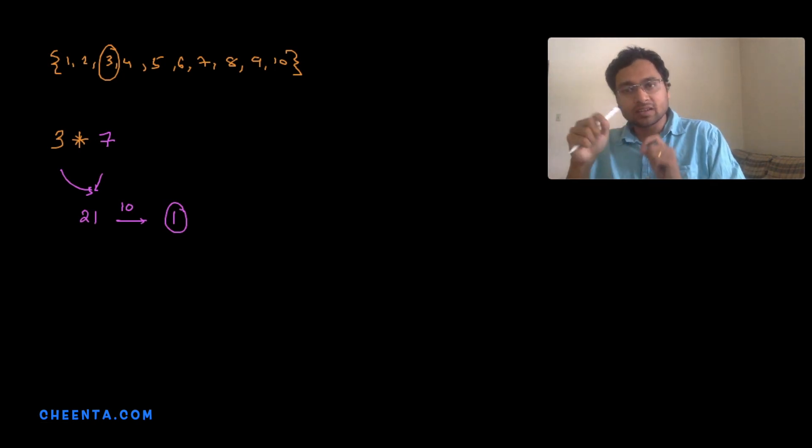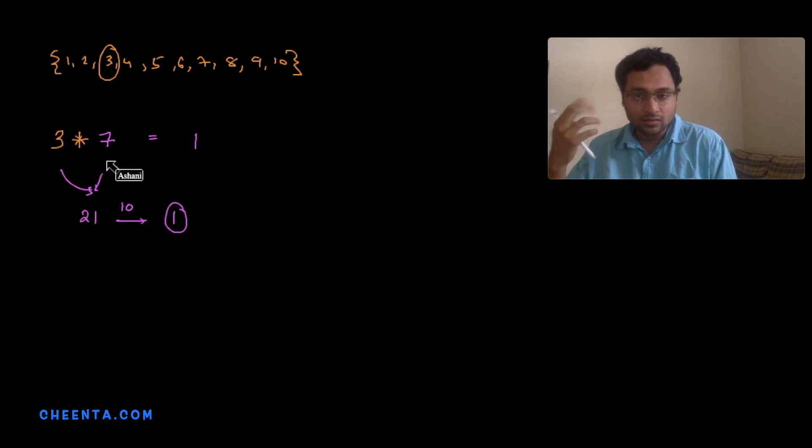That remainder is the output. So 3 star 7 and the output is 1 - that's how we define an inverse. You operate something with 7 and you get 1, so 3 is the inverse of 7 and 7 is the inverse of 3. So we observed that 3 does have an inverse.